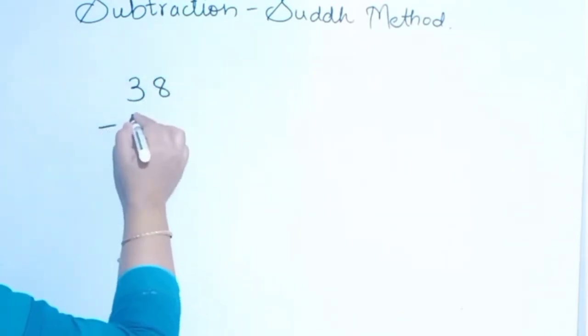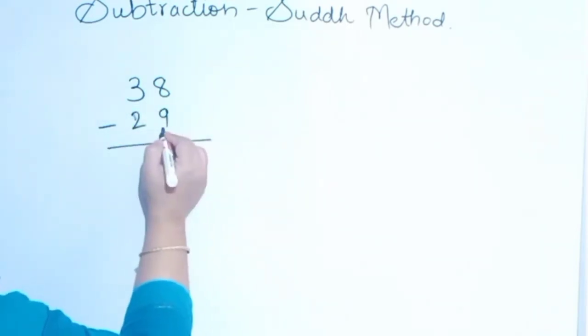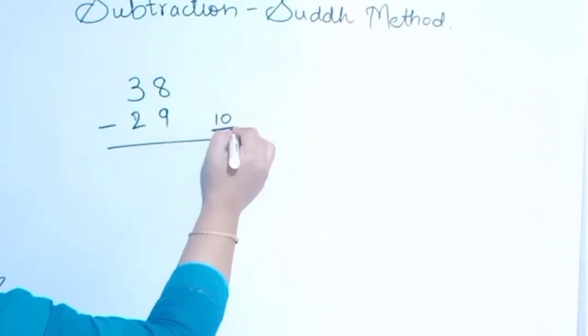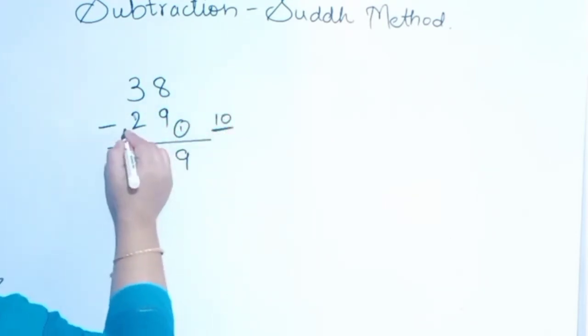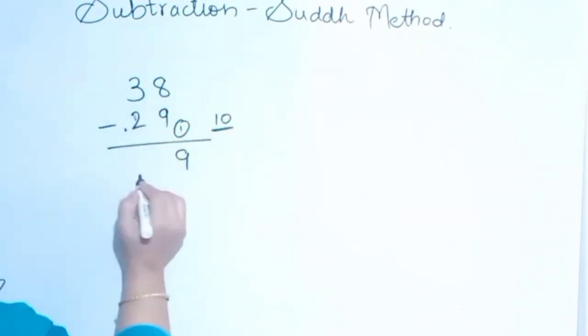38 minus 29. How many less is this from the complement number? 1. So 8 plus 1 is 9, and we have done a dot here. 3 minus 3 is 0. This is the answer. We will solve a bigger number.